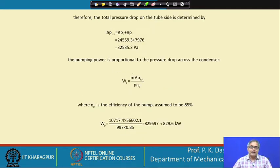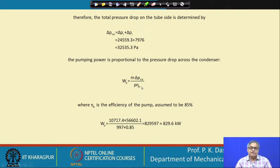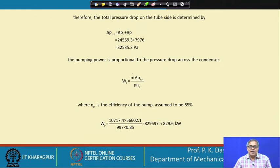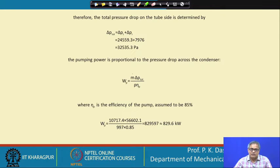From the total pressure drop, the pumping power can be determined as mass flow rate times delta_P_total divided by density and pump efficiency. These are large pumps, so an efficiency of about 85% can be assumed. With that, the pumping power comes out to approximately 829–830 kilowatts. This is essentially the feed water pump of the power plant, and for such a capacity it should indeed be quite large.